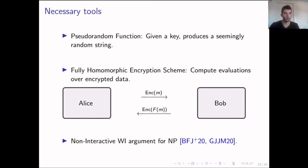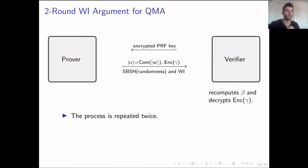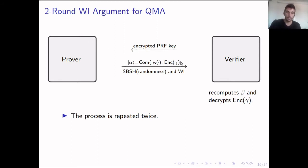Using all these tools and the sigma protocol with statistical zero knowledge, we arrive at our construction where the main idea is to use the fully homomorphic encryption scheme to round-collapse the sigma protocol. Instead of three messages, we have two. In the first message, the verifier sends an encrypted pseudorandom function key. The prover then sends both his messages at the same time: he samples a challenge using the PRF homomorphically, computes his commitment alpha and response gamma under encryption, and sends them back to the verifier.